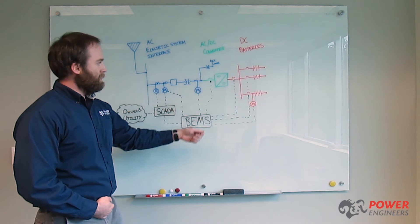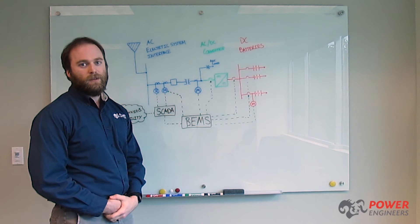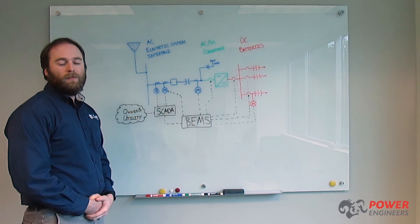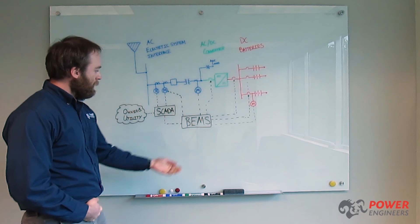Auxiliary transformers supply the station service loading of the facility. The BESS is controlled by a combination of SCADA and battery energy management systems. The SCADA system interfaces with owner and utility off-takers to provide manual controls and pass information back and forth between these entities.